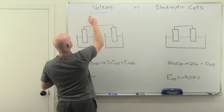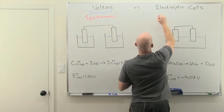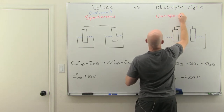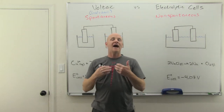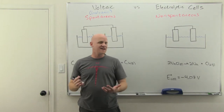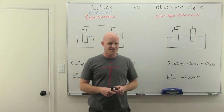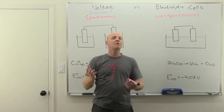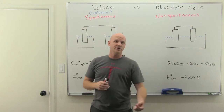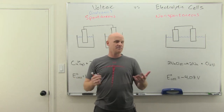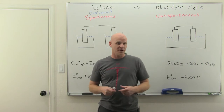A big major difference is that the voltaic cell is spontaneous and the electrolytic cell is non-spontaneous. Spontaneous just means something that happens without the input of outside energy, whereas non-spontaneous is something that won't happen unless we bring in some outside energy. Think of water flowing downhill — that is spontaneous, no energy input required. If you want water to flow uphill, you'd need a pump; that's non-spontaneous.